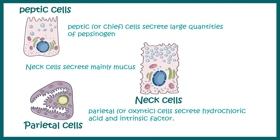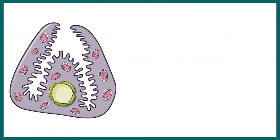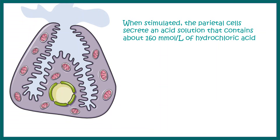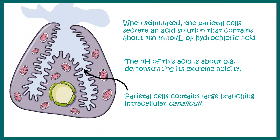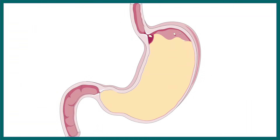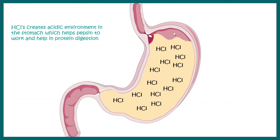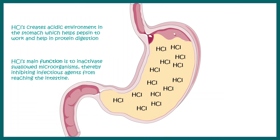The parietal cells, also known as oxyntic cells, are known for their secretion of HCl and Castle's intrinsic factor. The key focus of our discussion is gastric HCl secretion. The gastric HCl is secreted by the parietal cell, and about 160 millimoles per liter of hydrochloric acid is secreted. The pH of this acid is about 0.8, so it's highly acidic. Parietal cells contain large branching structures called canaliculi, which increase the surface area for gastric HCl secretion.